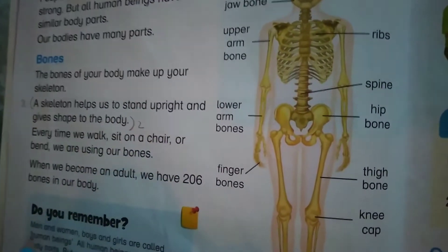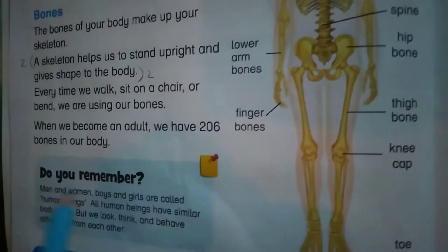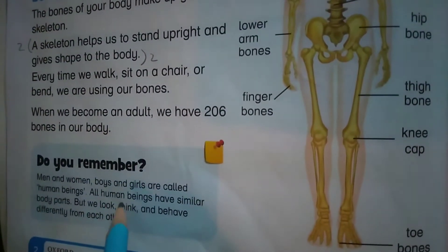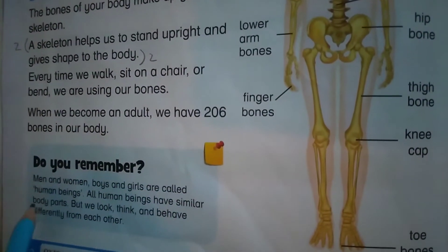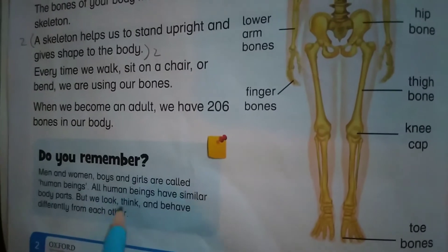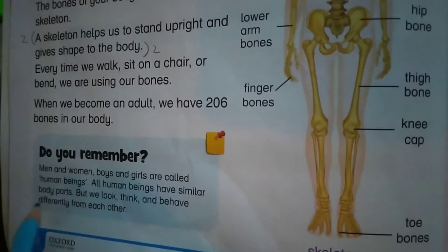When we become adults, we have 206 bones in our body. Do you remember — men and women, boys and girls are called human beings. All human beings have similar body parts, but we look, think, and behave differently from each other.